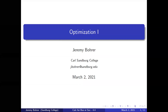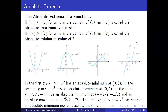In this video, we will discuss optimization and the absolute extrema of a function f. If f(x) is less than or equal to f(c) for all x in the domain of f, then f(c) is called the absolute maximum of f. If f(x) is greater than or equal to f(c) for all x in the domain of f, then f(c) is called the absolute minimum value of f.